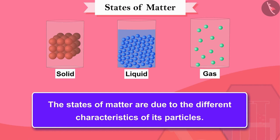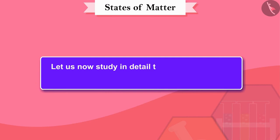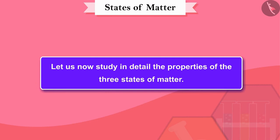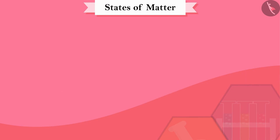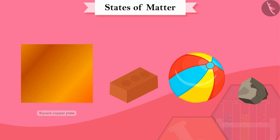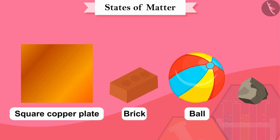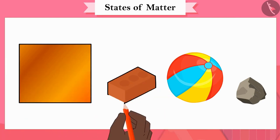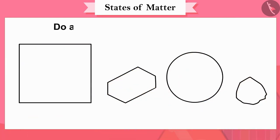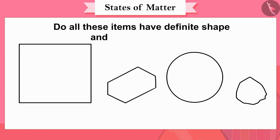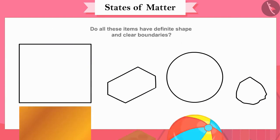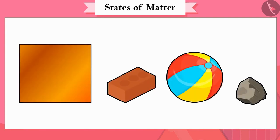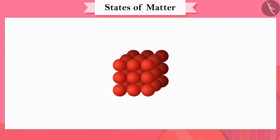Let us now study in detail the properties of the three states of matter. First, we will study the solid state. Collect these items: a square copper plate, brick, ball, and stone. Draw the shape of all these objects with a pencil on paper. Do all these items have a definite shape and clear boundaries? All these things are in the solid state of matter.